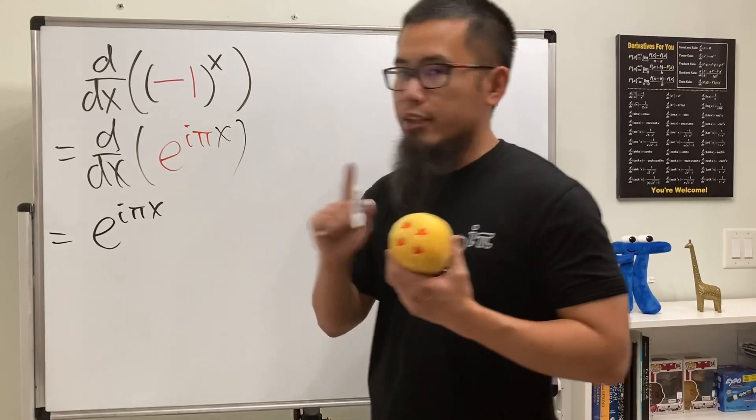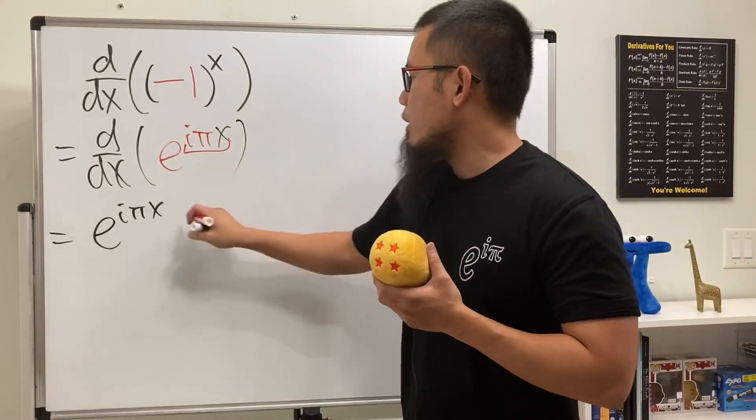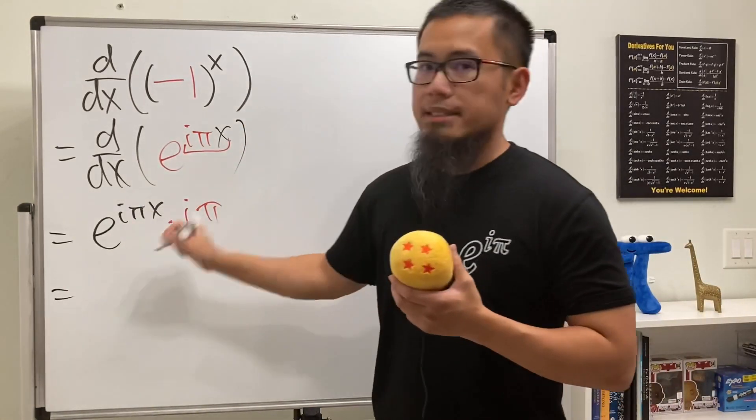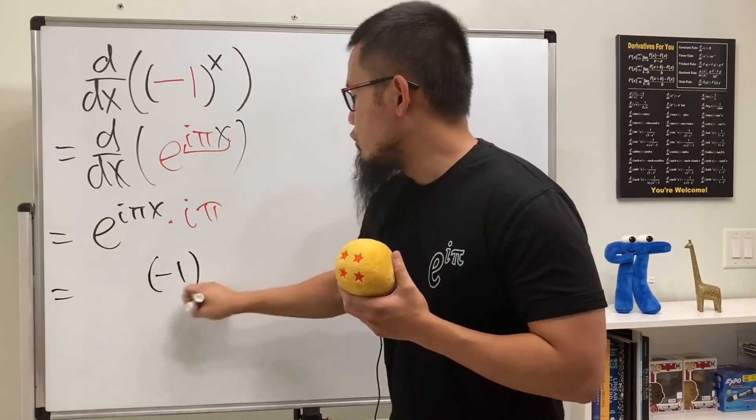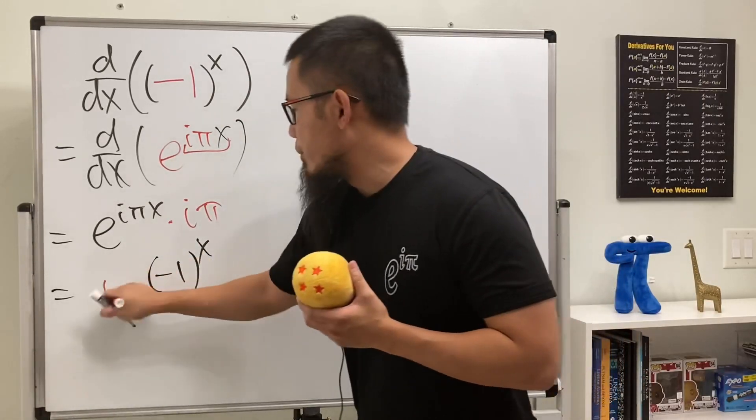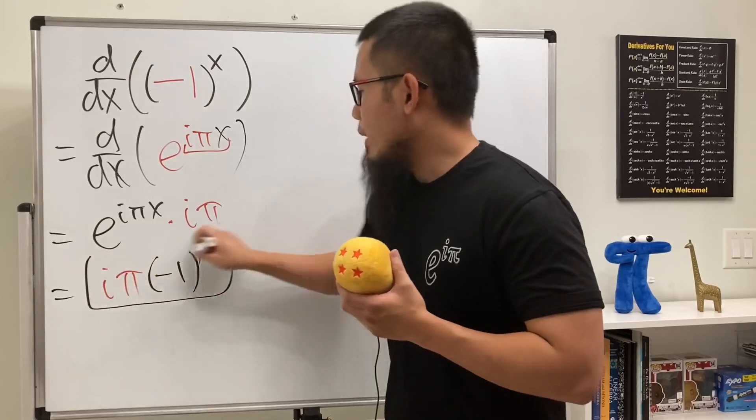iπx, and then don't forget the chain rule: multiply by the derivative right here, which is just going to be iπ. And as you can see, this is the same as the original. Let's put that down right here, which is negative 1 to the x power. And then we can put the iπ in the front, and guess what, we are done.